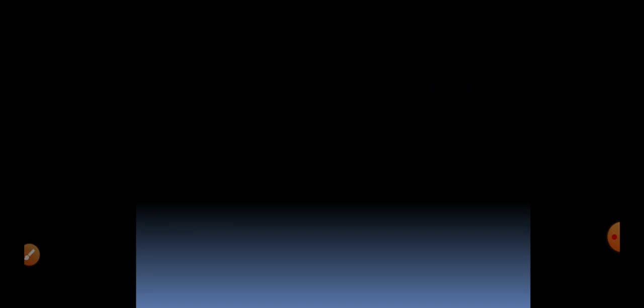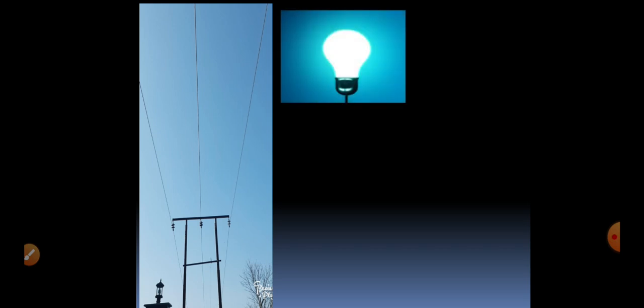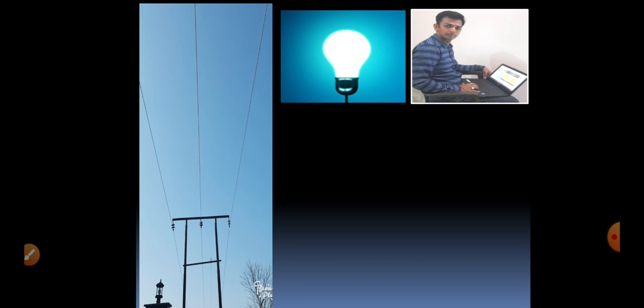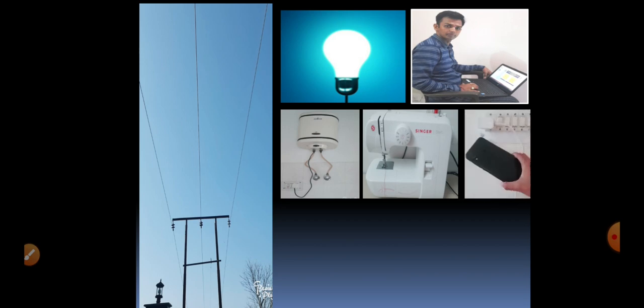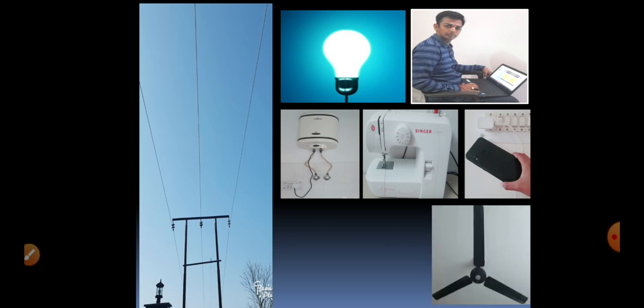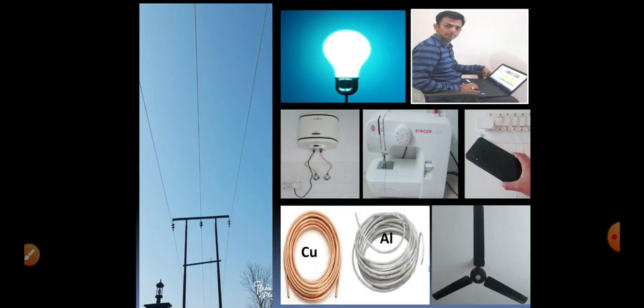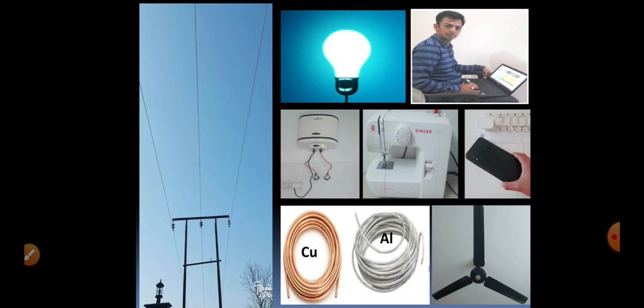Now, what are conductors? Electric current is carried from powerhouses to homes through conducting wires. We use this electric current to light up our houses and to operate different electric appliances like laptops, geysers, machines, charging cell phones, and moving fans. The electric current is carried by conducting wires which are metals — most commonly copper and aluminum. These wires are called conductors.